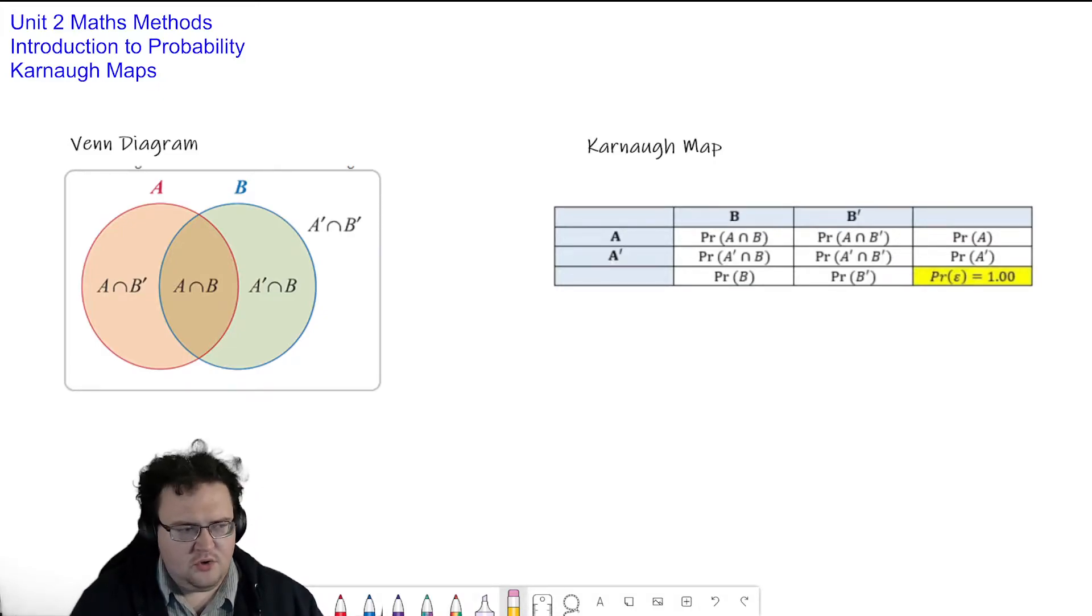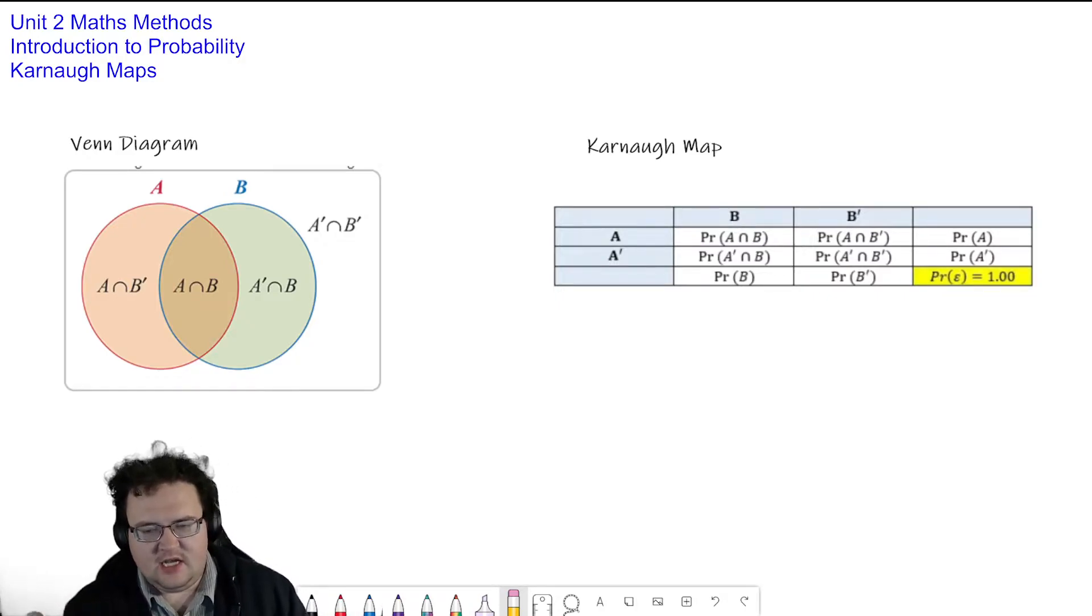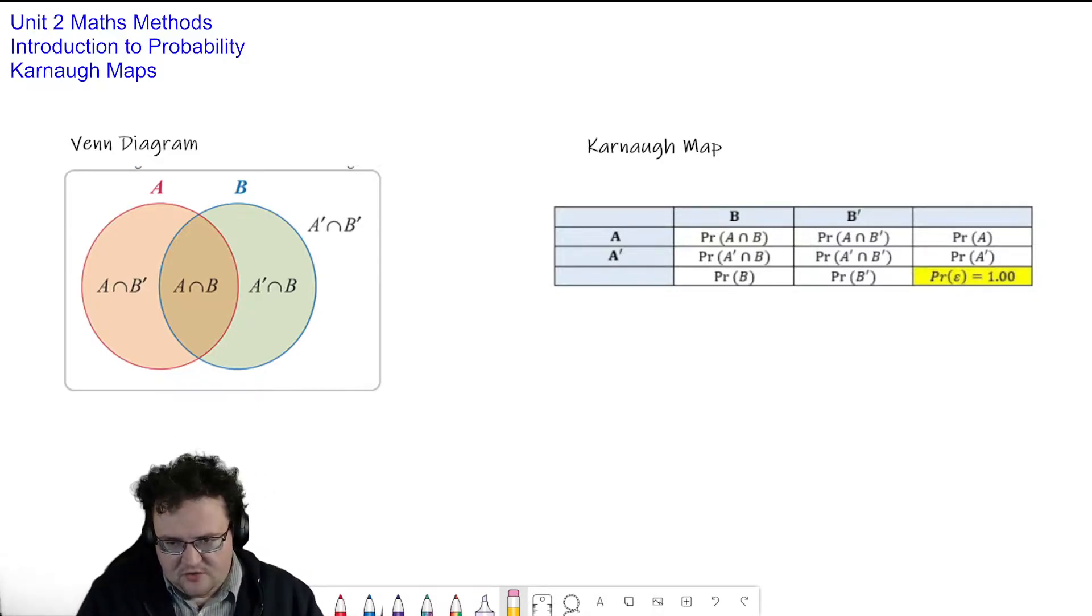Good afternoon. Welcome to my explanation for the next bit of probability, which is involving Venn diagrams and Karnaugh maps. So above me, above my head, I've got a Venn diagram. And what I've done is shaded the different sections and then labeled them using some of the probability nomenclature that we have been introduced over the last couple of videos. So in this orange bit here that looks a bit like a crescent moon, we have everything that is A and not B.